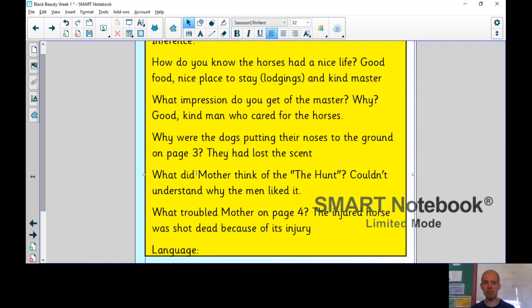What impression do you get of the master and why? He actually said that quite clearly. He was a good, kind man who cared for the horses and the way he treated Duchess, our protagonist's mother was very clear and he petted Darkie as he was known. Why were the dogs putting their noses to the ground on page three? Well, that's because they had lost the scent. So dogs have an incredible sense of smell, but they were trying to find that fox's scent that they'd lost. So they would have had their noses close to the ground and sniffing away.